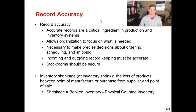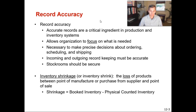Record accuracy allows organizations to focus on what's needed because you know you have on hand what you think you have. It's necessary to make precise decisions about ordering, scheduling, and shipping. If you don't have something on hand, you need to hurry and make or buy it. Stock rooms should also be secure, especially for A items, because they can be very expensive. You need to keep stock rooms secure so that expensive items do not get lost or stolen by employees — and it's sad to say, but it does happen.